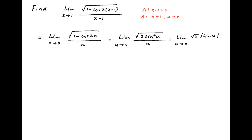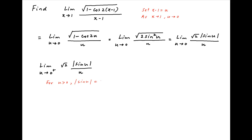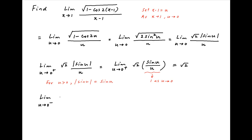Now we first determine whether this limit exists by evaluating the limit from the right-hand side. Limit u tending to 0 from the positive side of root 2 modulus of sine u upon u. Since u is positive, modulus of sine u is equal to sine u. Therefore this limit is equal to limit u tending to 0 from the positive side of root 2 sine u upon u. Since sine u upon u tends to 1 as u tends to 0, the value of this limit is equal to root 2.